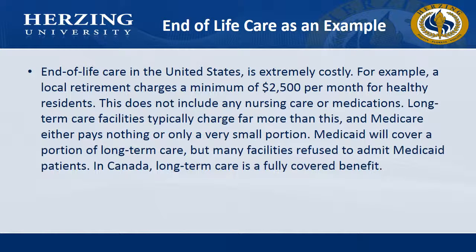End-of-life care in the United States is extremely costly. For example, a local retirement home charges a minimum of $2,500 per month for healthy residents. This does not include any nursing care or medications. Long-term care facilities typically charge far more than this, and Medicare either pays nothing or only a very small portion. Medicaid will cover a portion of long-term care, but many facilities refuse to admit Medicaid patients. In Canada, long-term care is a fully covered benefit. Each country has different rules regarding end-of-life care, but in underdeveloped and developing countries, this is considered a luxury.